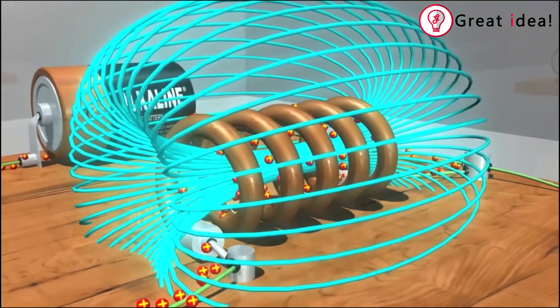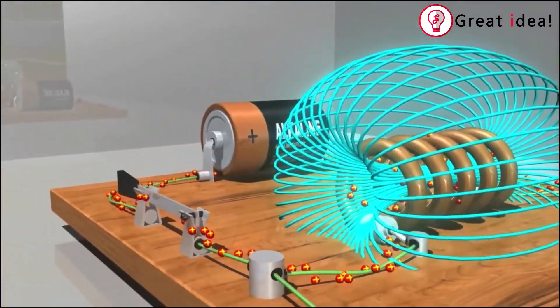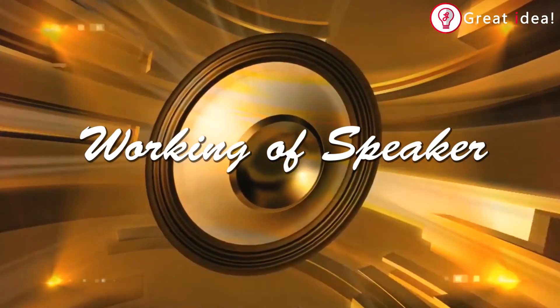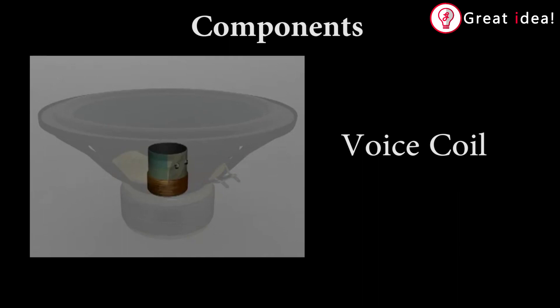I mentioned 3 concepts. You can use the speaker and it will be very easy to use. Let's look at the components. There is a magnet with two metal plates. This magnet will produce a magnetic field. Here is the voice coil. The voice coil is a conductor with a paper or sheet. It will use the electromagnetic induction principle.